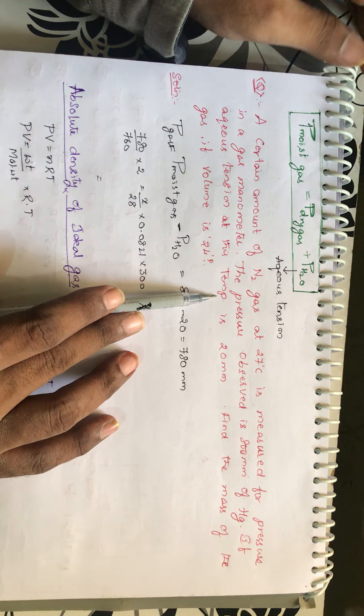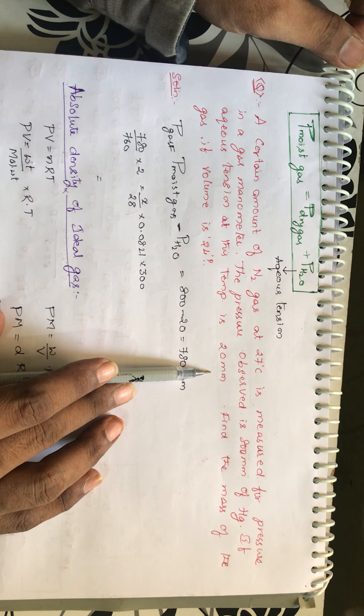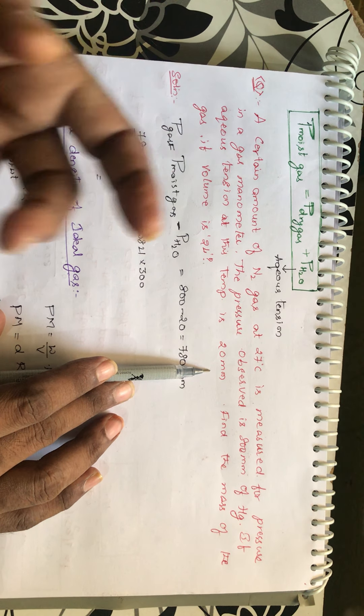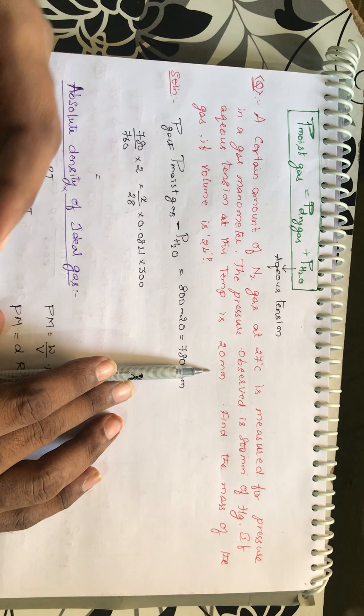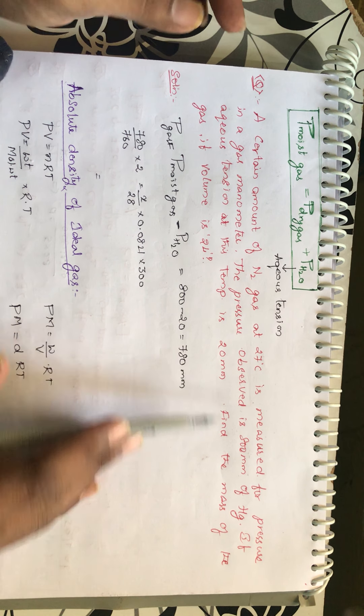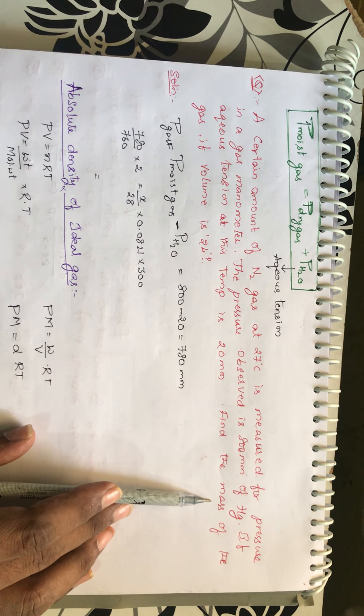If the aqueous tension at this temperature is 20 mm, so what he is telling, if you remove the aqueous, the aqueous tension means the pressure exerted by the water vapor, it is 20 mm. Find the mass of the gas. He is asking the weight.